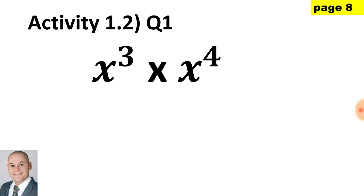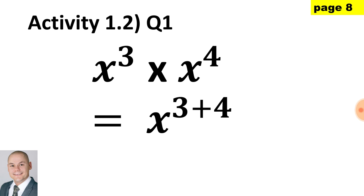In question 1, when multiplying bases that are the same we would add the exponents. Therefore we would have x to the 3 plus 4, and that would give us x to the 7.